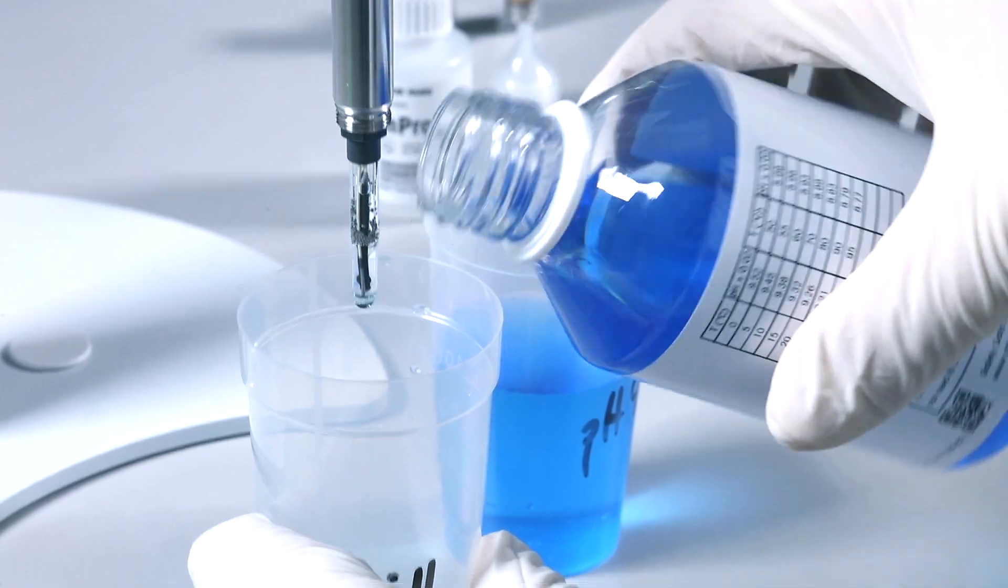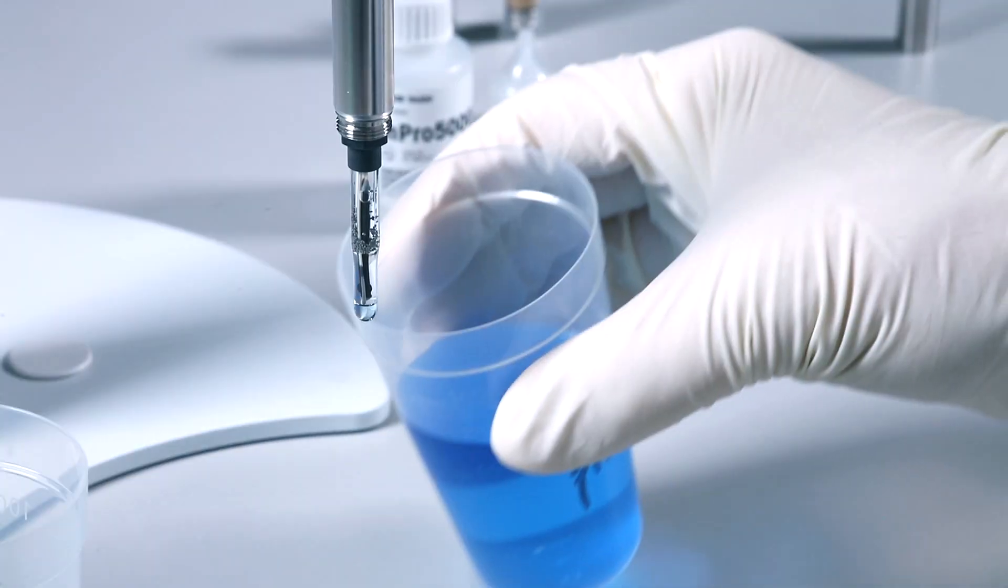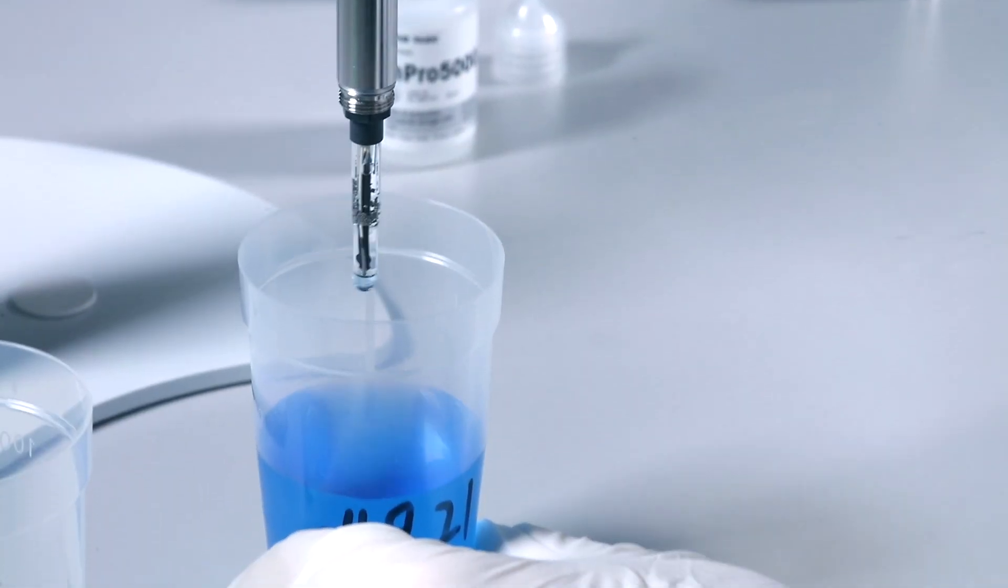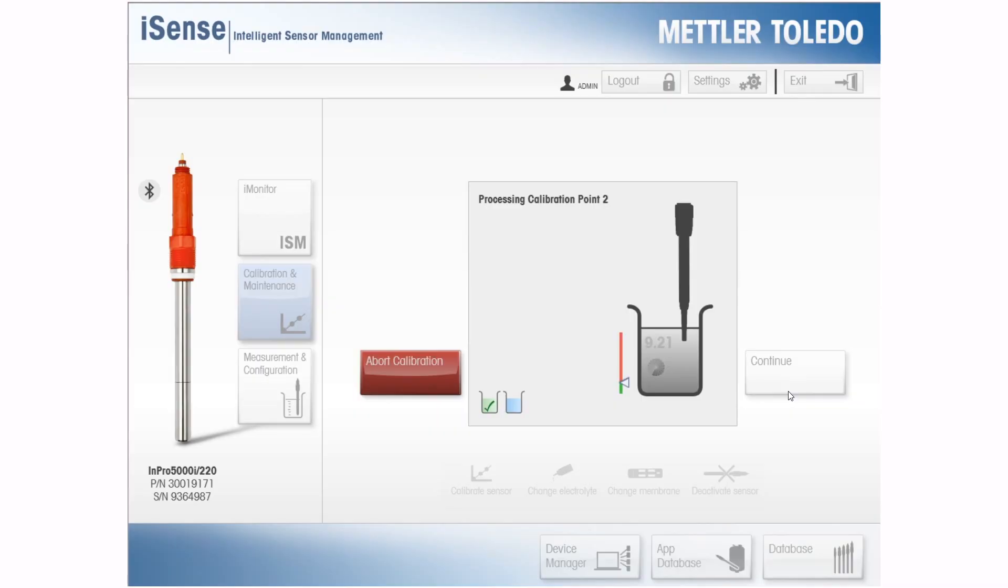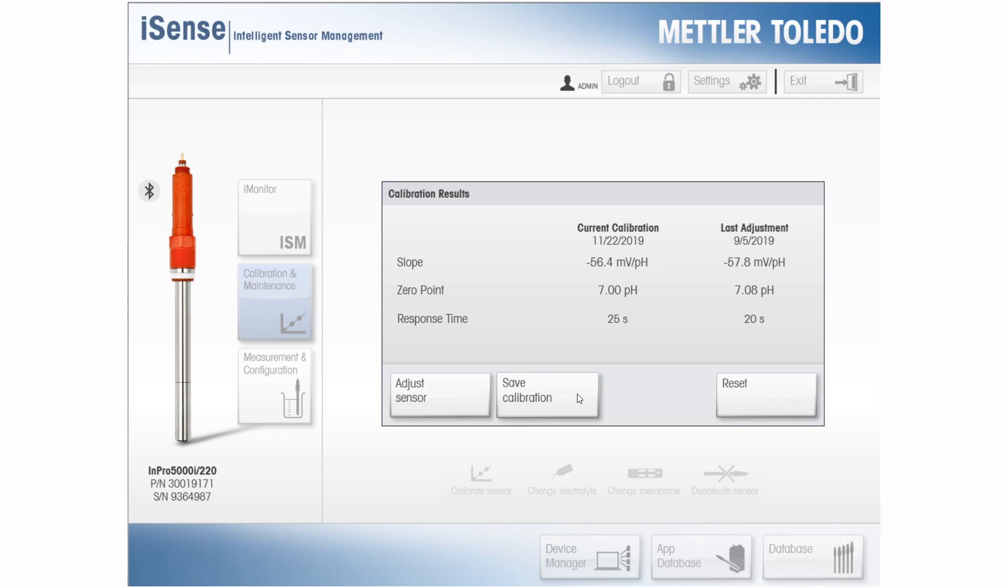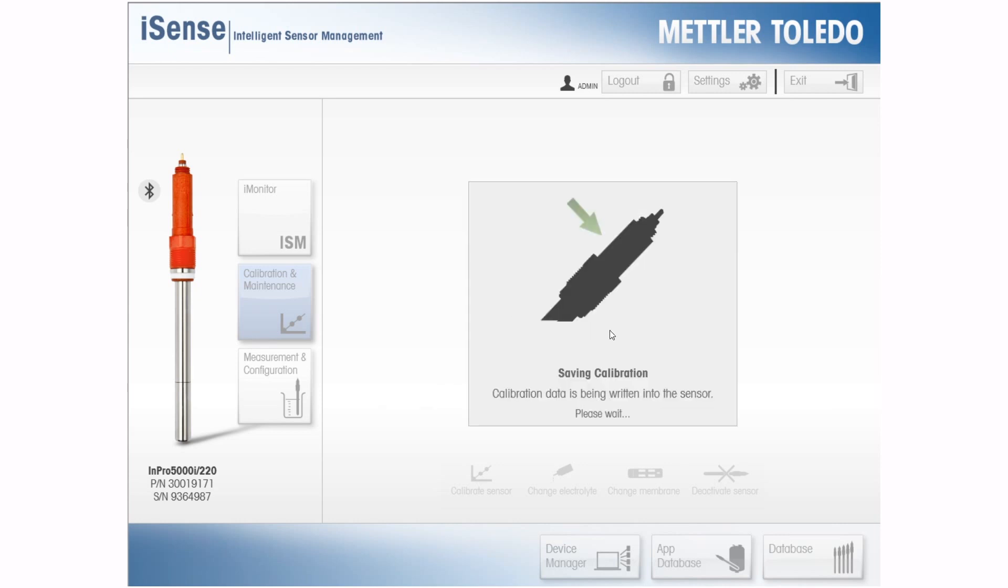Unlike standard pH sensors, adjusting the pH probe in the NPRO 5000i is not necessary at this stage. The purpose of this calibration is to check the sensor's slope. If the slope is above 90%, the sensor can be confidently used again. If the slope has fallen below 90%, the pH probe must be replaced. Press save calibration to record the data to iSense. The data can be used to conveniently monitor sensor slope from batch to batch.